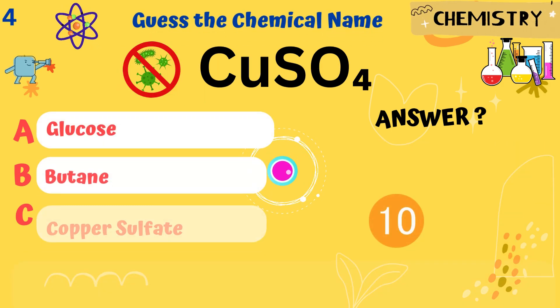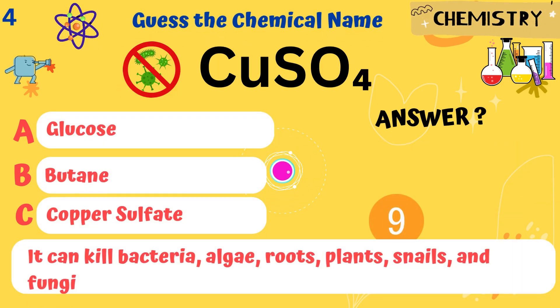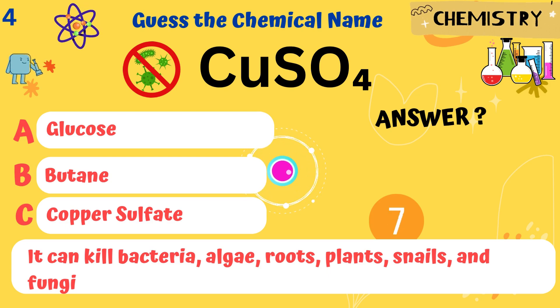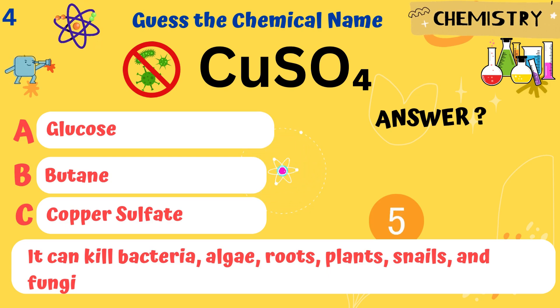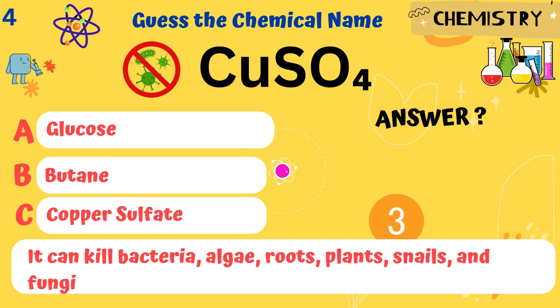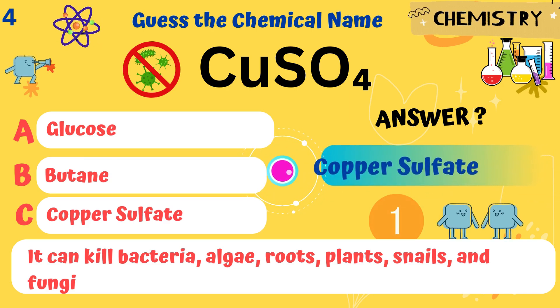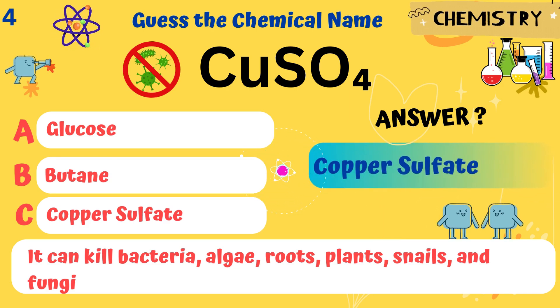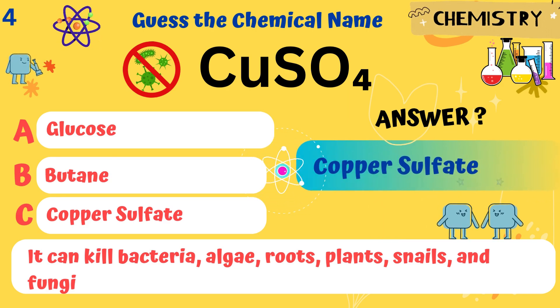CuSO4. It can kill bacteria, algae, roots, plants, snails, and fungi. Answer: Copper sulfate.